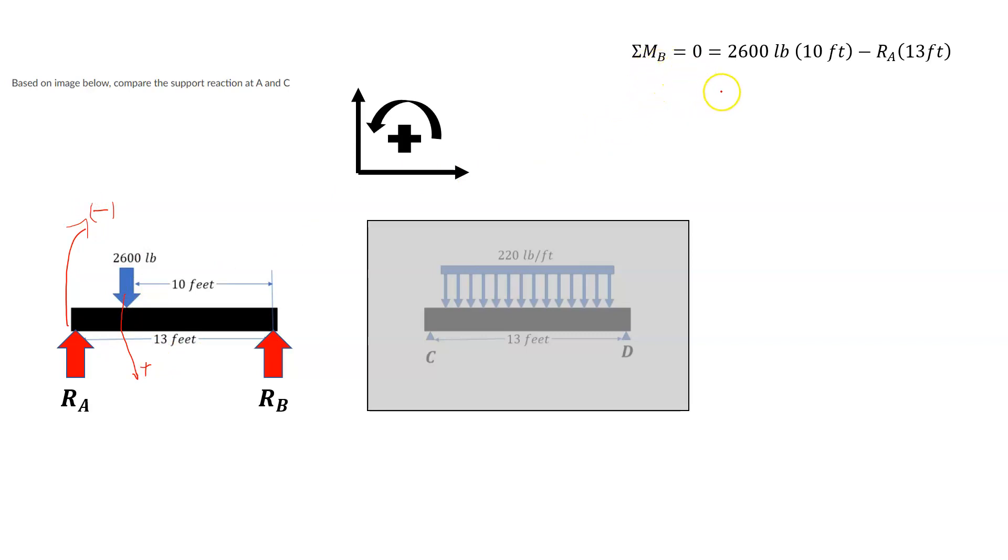So when we look at this, the sum of moments about B, we have 2600 pounds times 10 feet, because the distance is 10 feet away, minus the support reaction at A times the full 13 foot distance of the beam. So we just multiply 2600 times 10, we end up with 26,000 foot-pounds minus RA times 13 feet. Now we solve for RA, the one unknown in the equation, we end up with 26,000 foot-pounds over 13 feet. The feet cancel out, and we end up with 2000 pounds at reaction A.